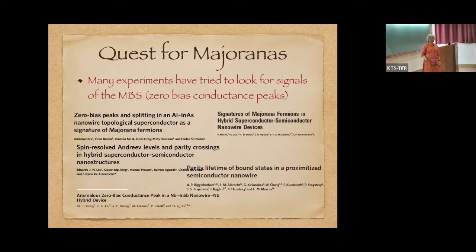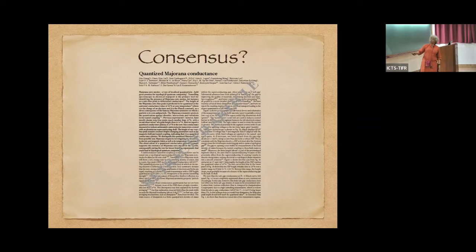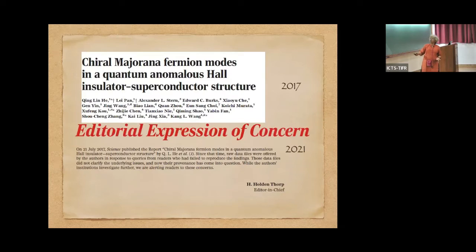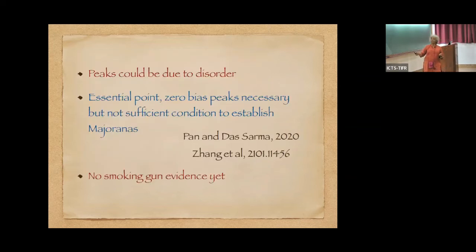And so there have been many experiments which have tried to look for these Majoranas. And basically what they look for is something called a zero bias conductive peak. In fact, one of the first experiments in this context was made by Anindya Das of IISER. So many of you may have heard of this and heard his talks, but the problem is that many papers in this area, but as of now, most of these papers are retracted or have not been reproduced. Or they've also been a chiral Majorana fermion mode, and there's an editorial expression of concern saying that these experiments have not been reproduced. So the essential point is that now the consensus is that the peaks that people have been seeing for the last several years could be perhaps due to disorder.